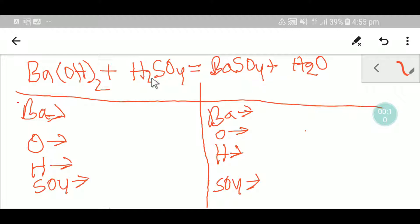On the left hand side we have one barium, two oxygen, and two hydrogen. We also have two hydrogen here, so totally we are getting four hydrogen.